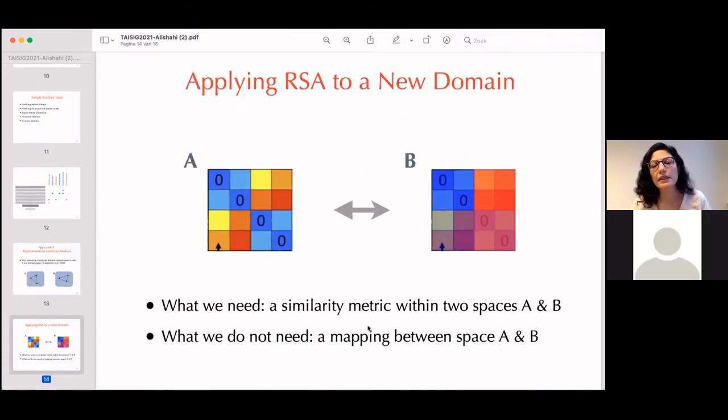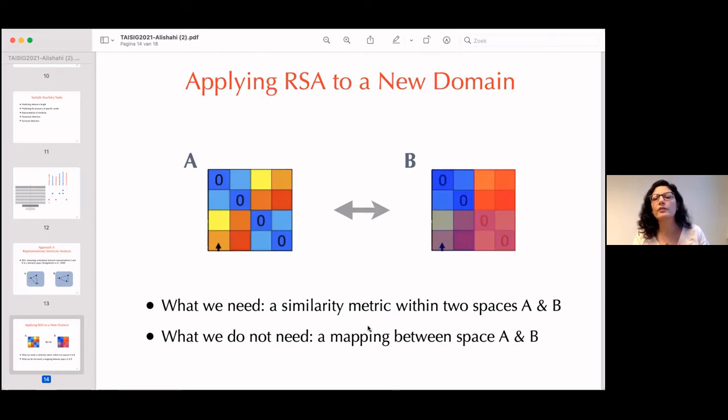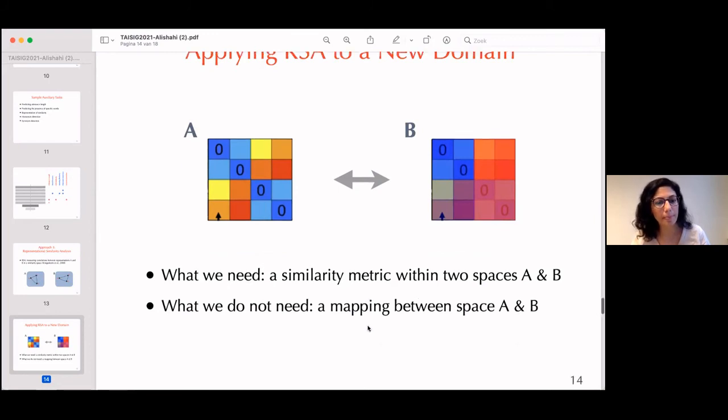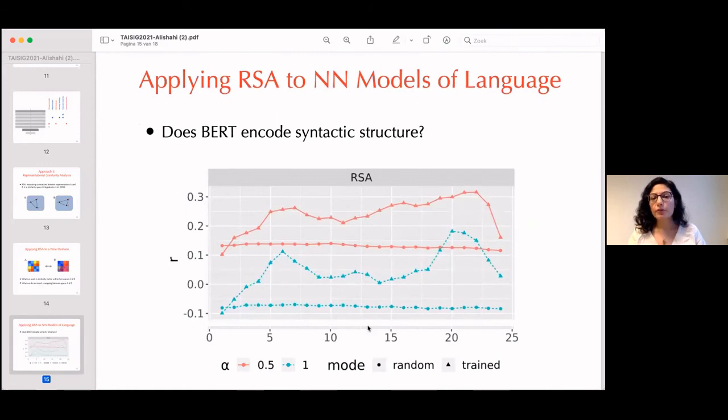What we need here is basically a similarity metric within two spaces A and B. And what we don't need is a mapping between these two spaces. So in that sense, these models are very versatile. And just as an example of their application, we apply this method to BERT that I mentioned on the first slide to see whether it encodes anything about syntactic structure. And here you see that BERT, the red lines, the BERT model actually encodes most syntactic structure on its top layers, mainly layers 22 to 24.